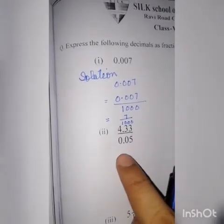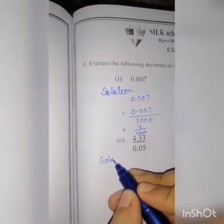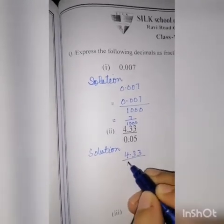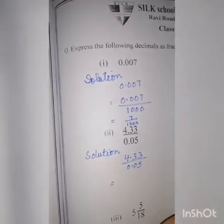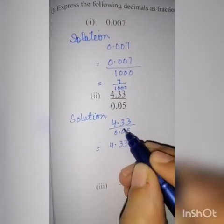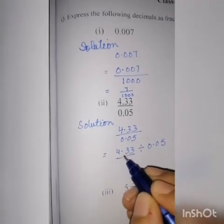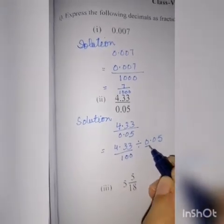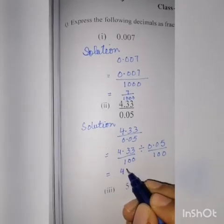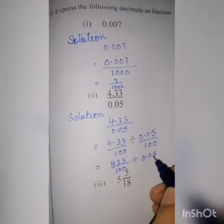Next है आपका 4.33 divided by 0.05। Point के बाद कभी भी आपने उसे इकट्ठा नहीं पढ़ना। जैसे 4.33 divided by 0.05 — अब इसे fraction में change करना है। आप पहले इस तरह से लिखें: ये divide हो रहा है तो आप इसे divide के sign की तरह लिखें। Point की जगह पर इधर भी one और बाकी जितनी values उतने 0 — over 100 divided by 0.05 over 100।